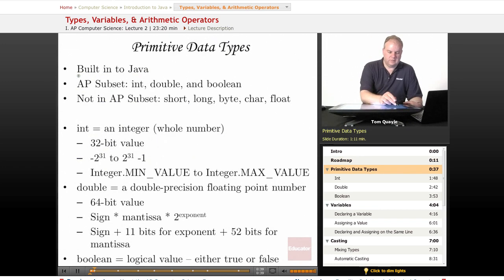Primitive data types are the data types that are built into Java. In the AP subset, there are only three that you need to be concerned with. Int, which stores integers or whole numbers.